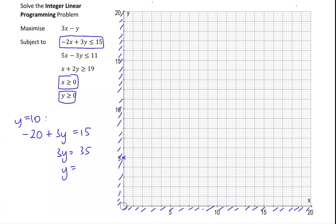When y is 10 we're going to have minus 2x plus 30 is equal to 15. Take the 30 from both sides and x is going to have to be equal to 7.5. That's a little bit better.